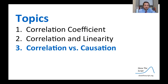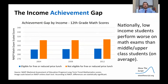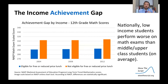Let's turn to our final topic: correlation versus causation, which brings us to our discussion section. We're going to start by discussing the income achievement gap. Here is a chart where the y-axis is scores on a standardized exam. The bars in blue represent students eligible for free or reduced price lunch, while students in orange are not eligible. We see a result that's reflected nationally: low-income students on average perform worse on math exams than middle or upper class students. We'll define this as the income achievement gap.